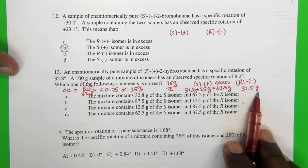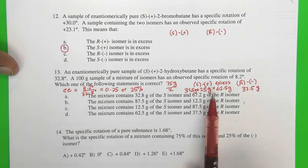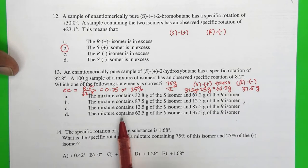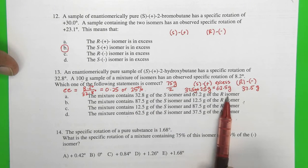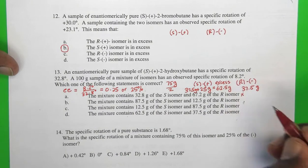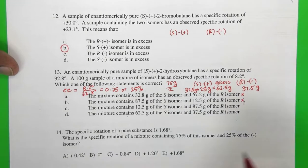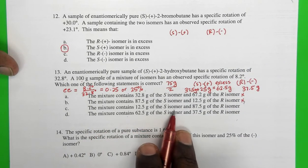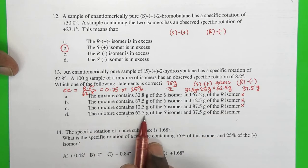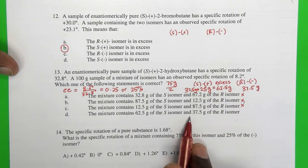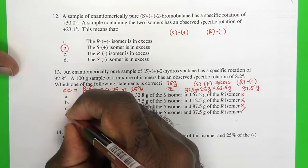And I go to my options A, B, C, and D, and see which matches best to what I've just put down on paper. The mixture contains 32.8 grams of the S isomer and 67.2 grams of the R isomer - that's not it. The mixture contains 87.5 grams of the S isomer and 12.5 grams of the R isomer - that's not it. The mixture contains 12.5 grams of the S isomer and 87.5 grams of the R isomer - no. The mixture contains 62.5 grams of the S isomer - that's what I had - and 37.5 grams of the R isomer. That's what I had. So the answer must be D.